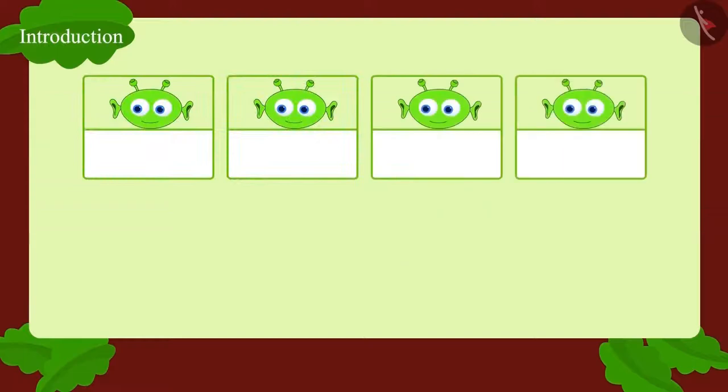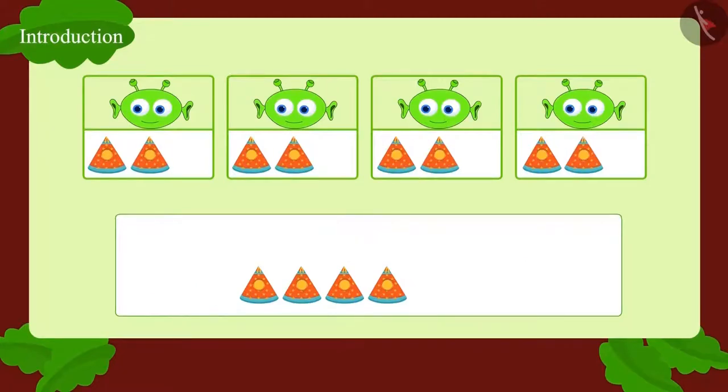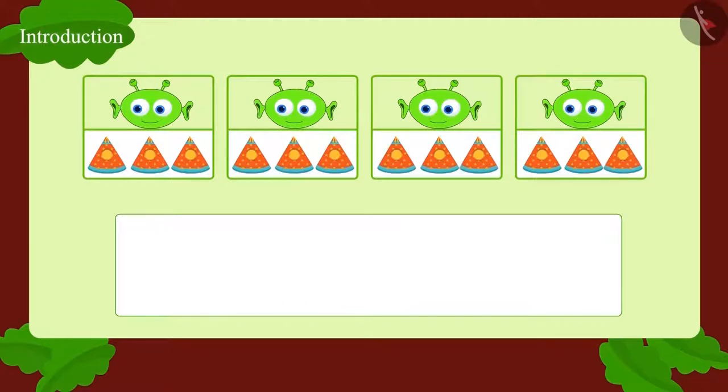First, we will give one flower pot to each friend. How many flower pots are left? 8. Now we will continue giving one flower pot each to the 4 friends till all the flower pots are over.